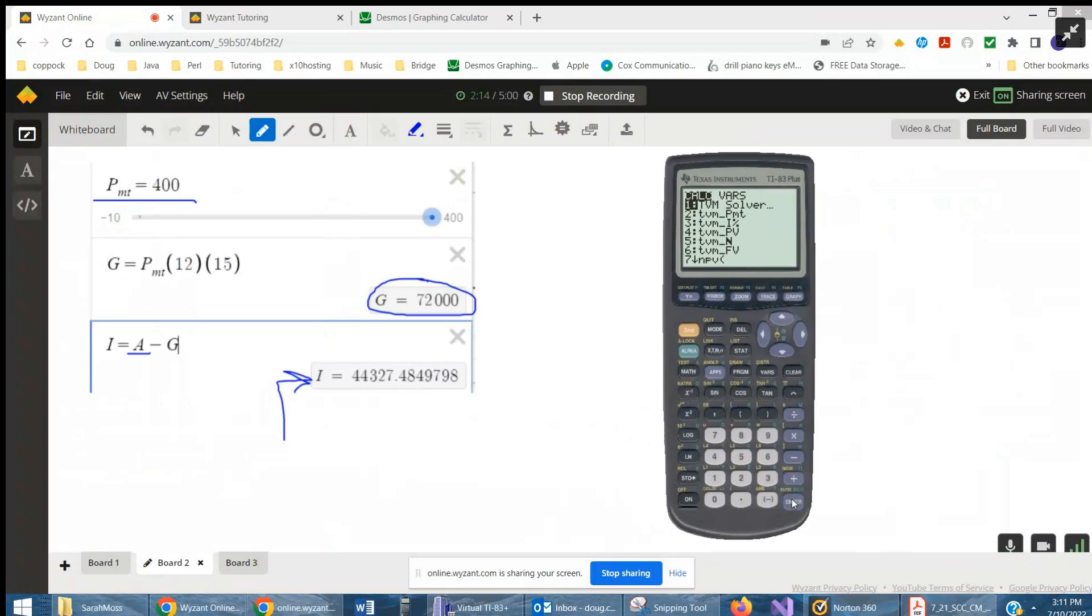Enter, because you're in finance, there's a TVM solver. N is the number of payments. Well, that's 12 months times 15 years. That'll be 180 payments. The interest rate is six.